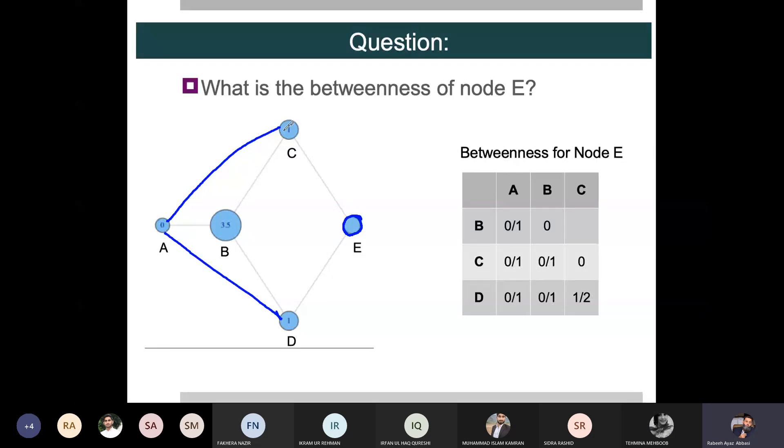So if we want to reach C to D, how many shortest paths exist? Two. C, A, D and C, E, D. Three exist: C, A, D, C, B, D and C, E, D.